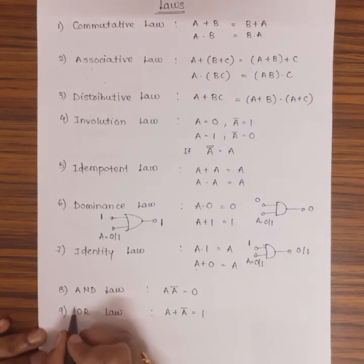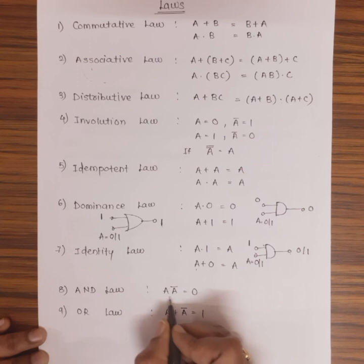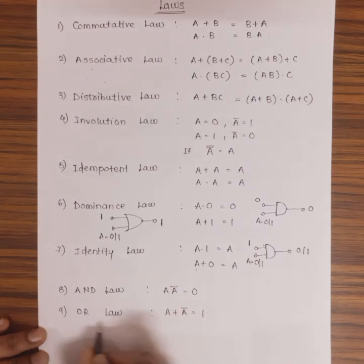Then AND specific law is mentioned over here: A · Ā = 0. OR specific law is A + Ā = 1.